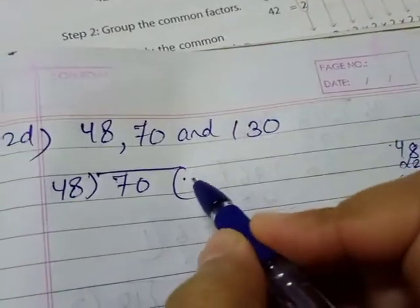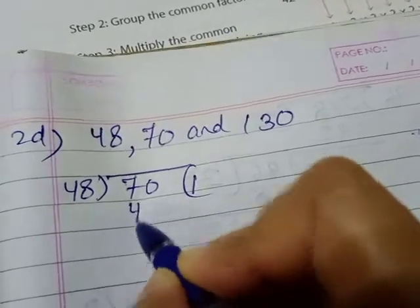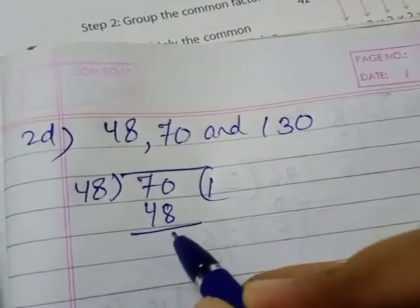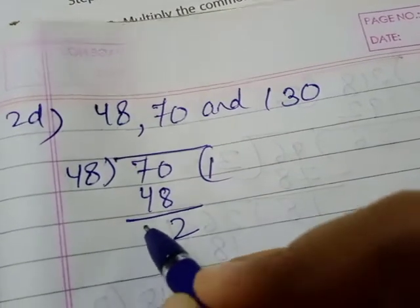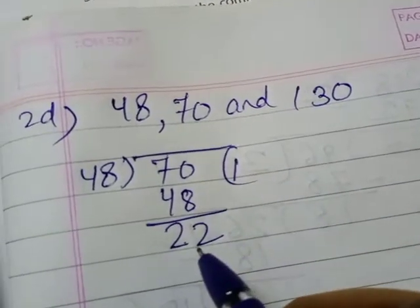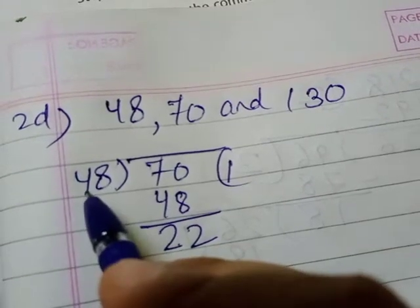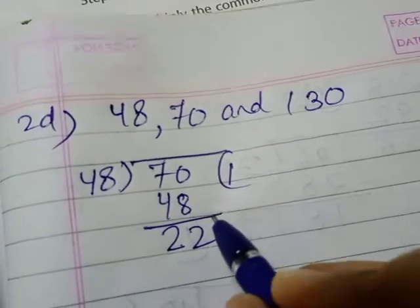Now 10 minus 8 is 2, and 6 minus 4 also is 2. When we have the remainder, what do we do? The divisor which we have, we will write in the dividend place. Keep in mind.